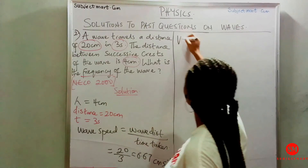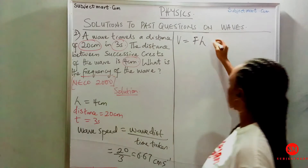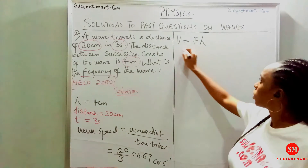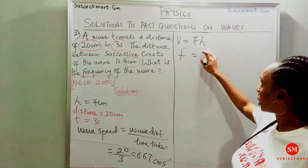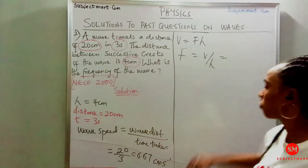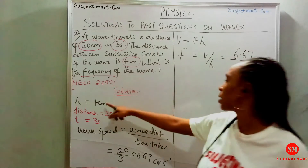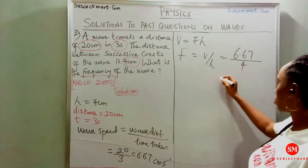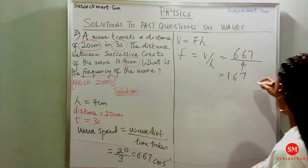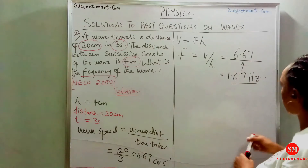Now using the equation v equals f lambda, we need to find the frequency f. Making f the subject of the formula gives us f equals v over lambda. We have v as 6.67 over lambda which is 4. Dividing this gives us 1.67 Hz as our frequency.